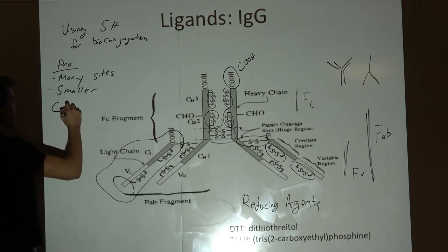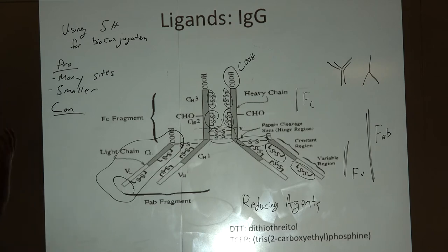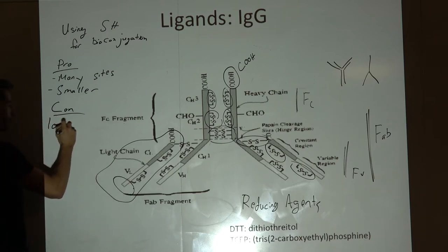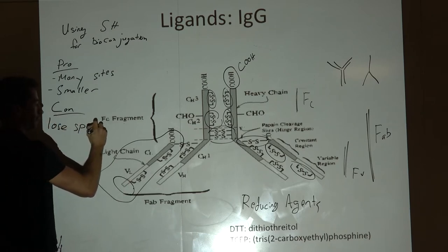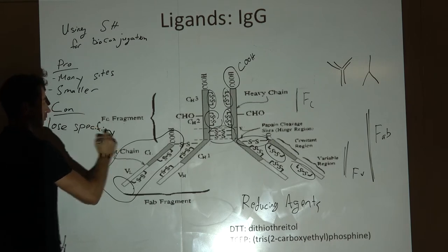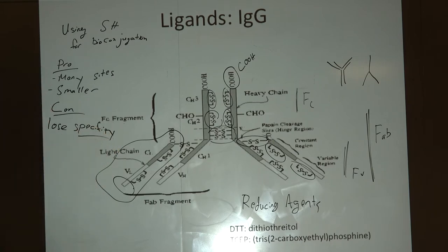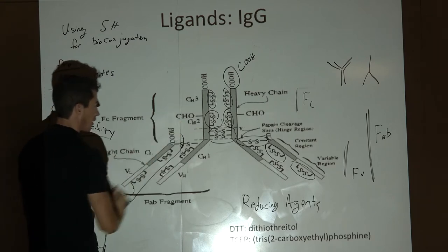But the con is, nature developed this for a reason. Once you start adding these reducing agents, you lose specificity. Once we lose specificity, the value of this ligand starts to go down.